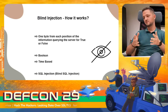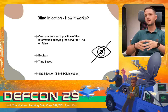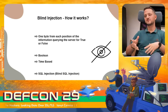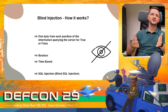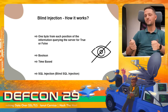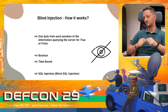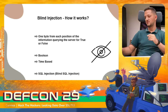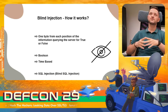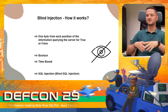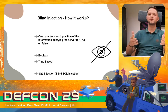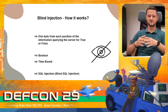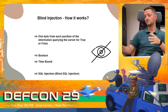Blind injection. It's about when you are trying to interrogate the server for true and false in order to take one byte at a time from the information you target. This is done by Boolean-based or time-based techniques. The most common cases where you will encounter this technique will be at an SQL injection vulnerability — you may have heard about blind injection or blind SQL injection.